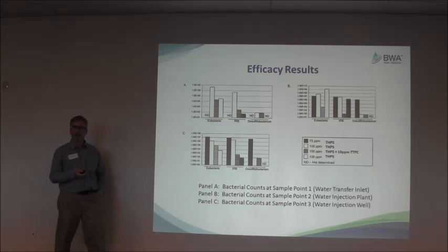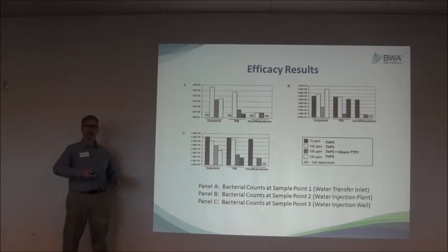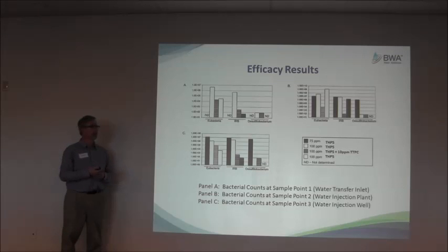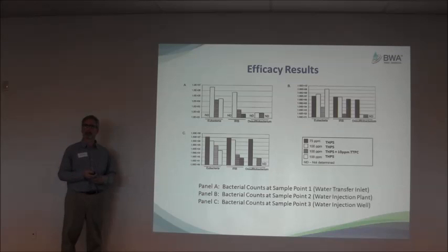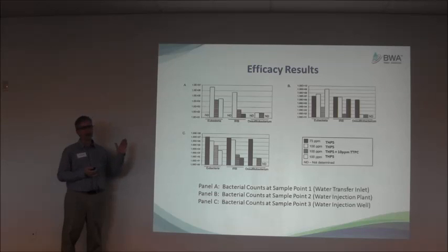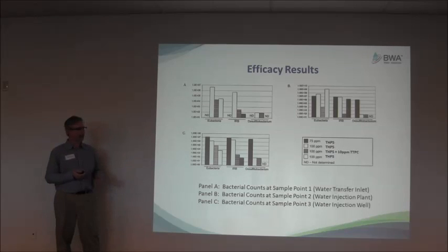In some cases, they actually saw regrowth after the second biocide was removed and the system went back to straight THPS. This shows that sulfate reducers were being taken care of, but iron-reducing bacteria can create organic acids that cause corrosion — there are other bacteria in the system that can be problematic. They were getting much better microbial control across different species using the two biocides.